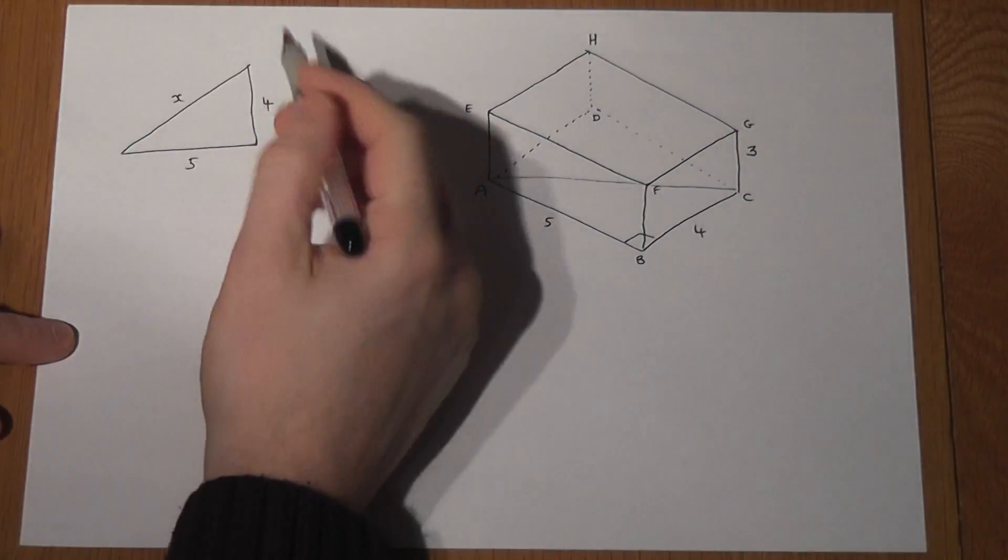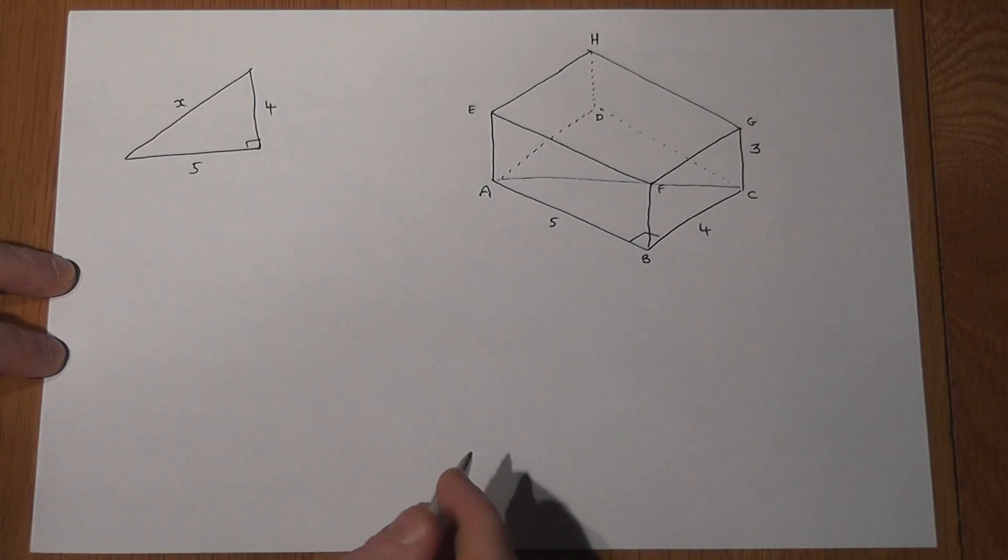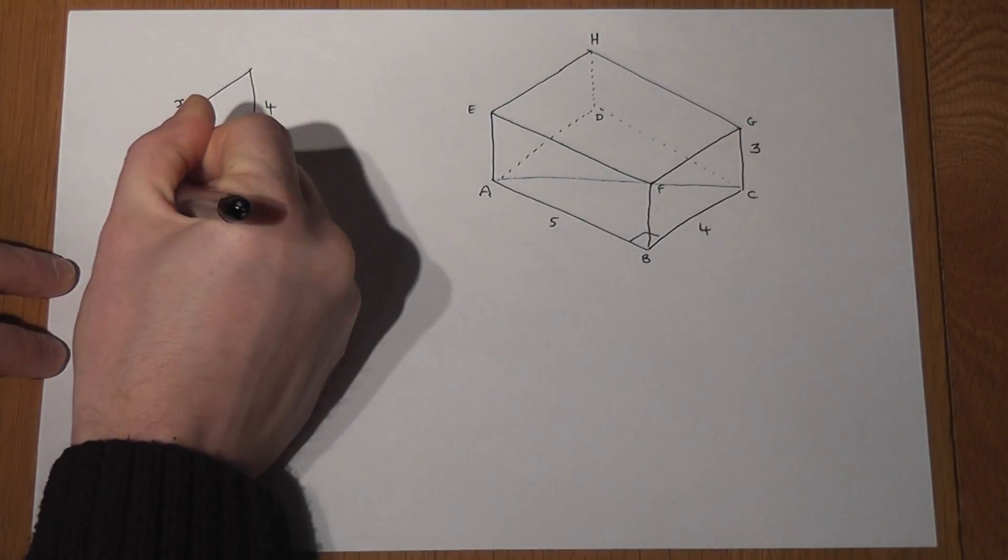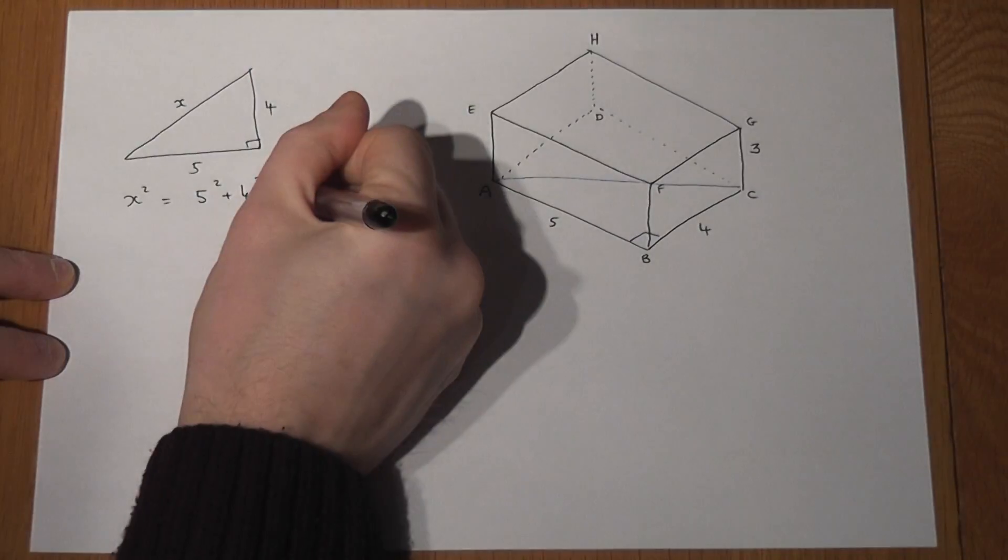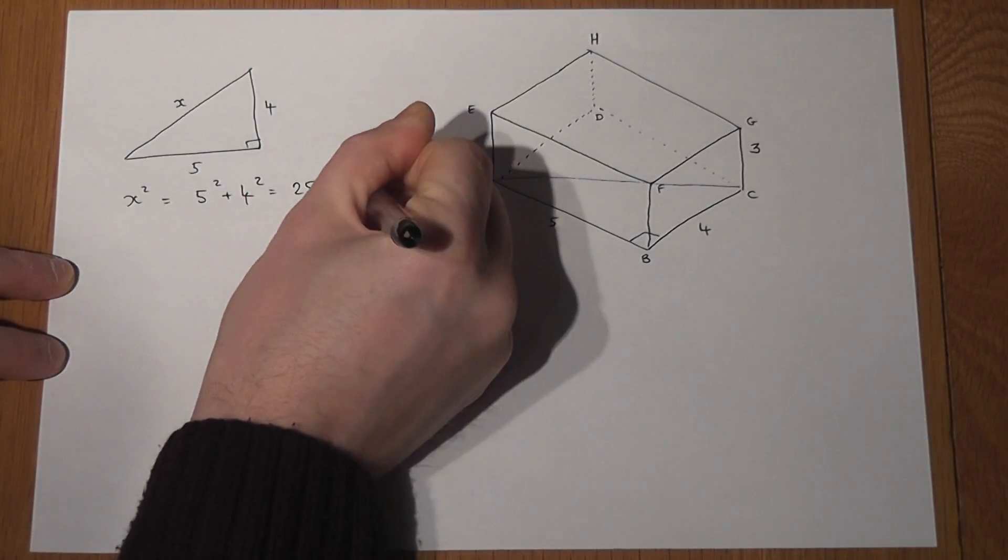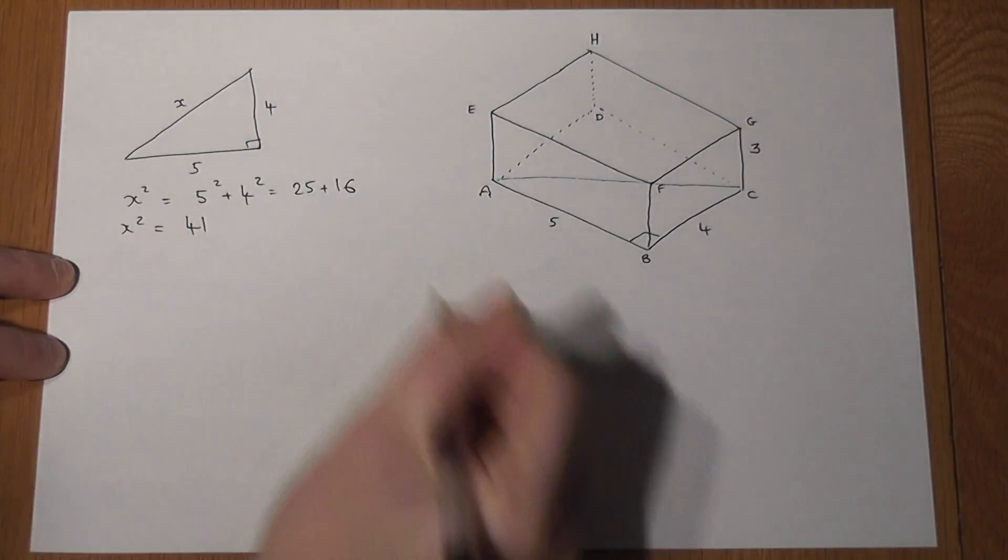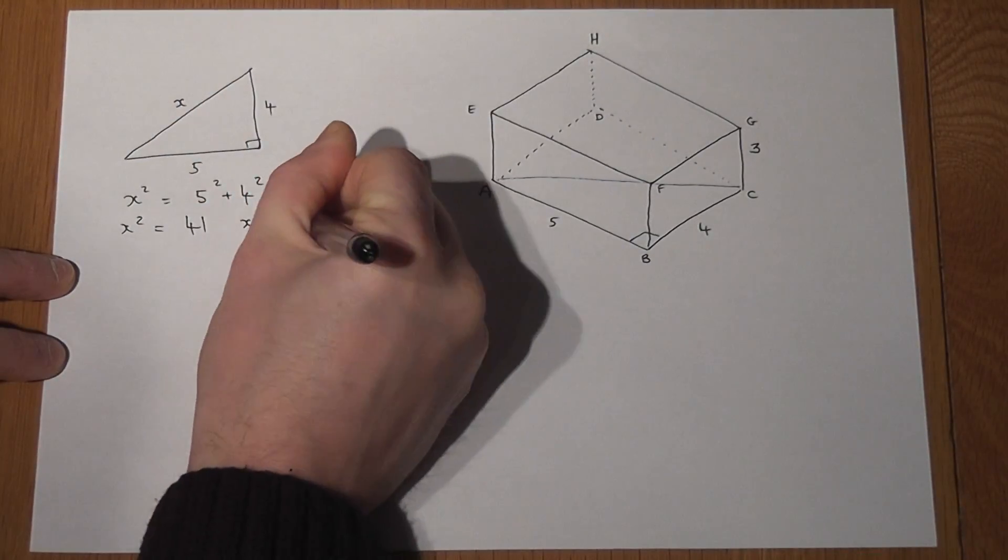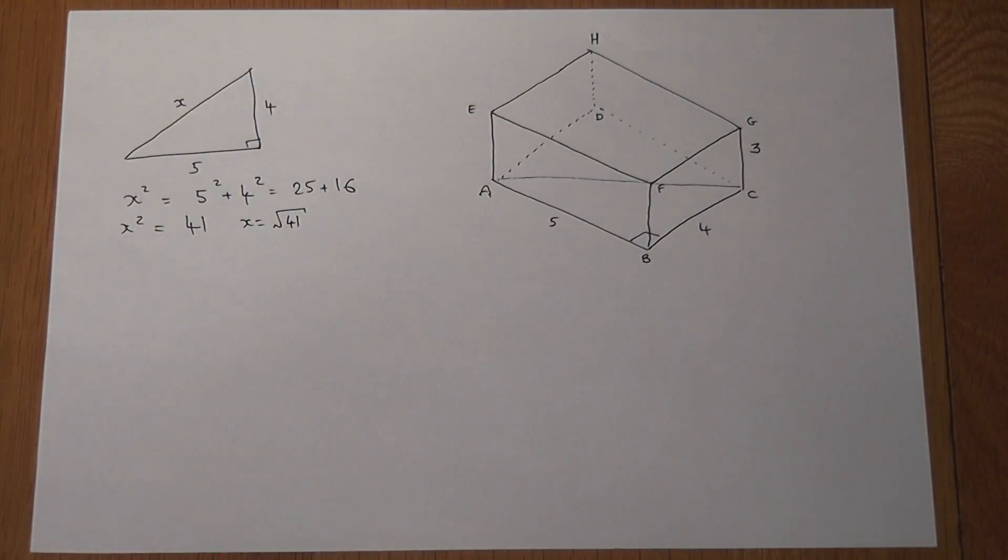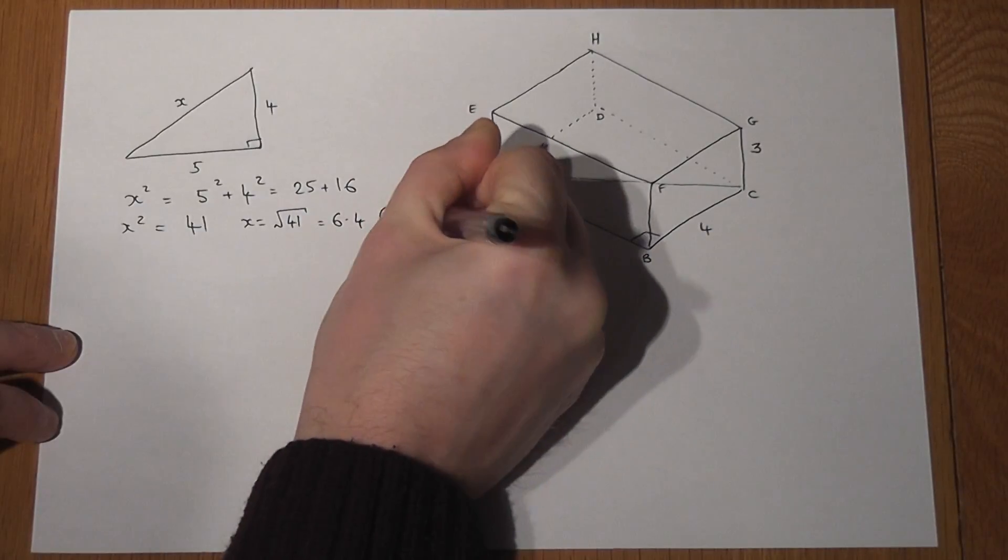Now because this length is the hypotenuse, we can use Pythagoras to find its length. So to find X, X squared equals 5 squared plus 4 squared, which is 25 plus 16, so X squared equals 41. So the length of X is just the square root of 41, which as a decimal equals 6.4 to one decimal place.